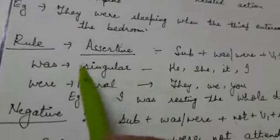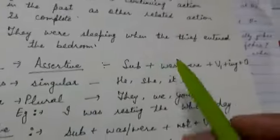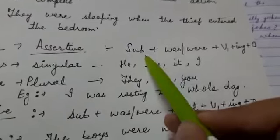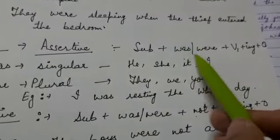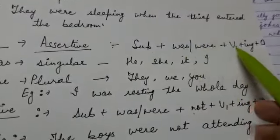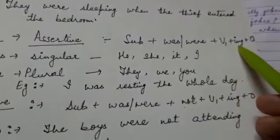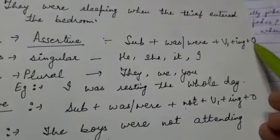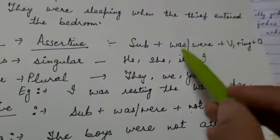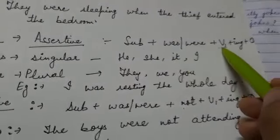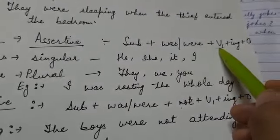Next is the rule. Is mein hum kya use karte hain: subject + was/were + verb's first form with -ing + object. Was/were and verb's first form with -ing.